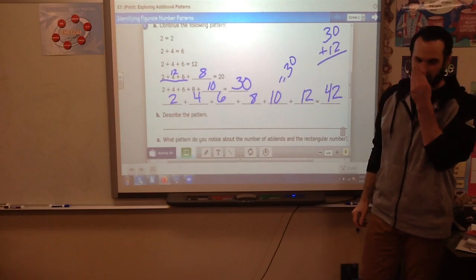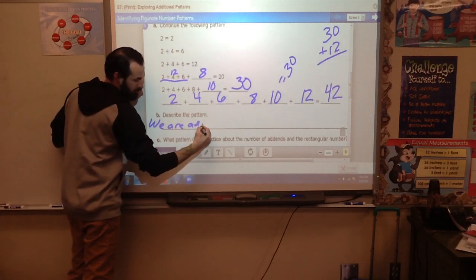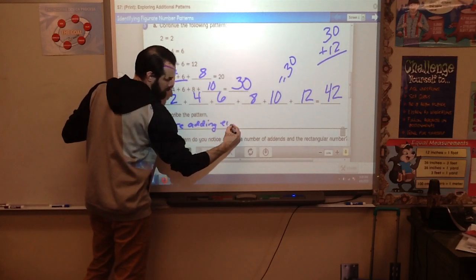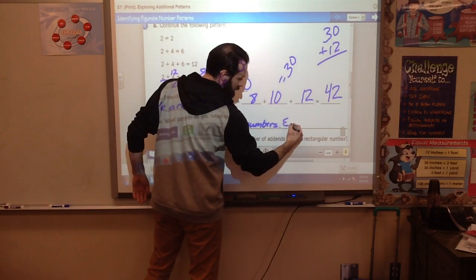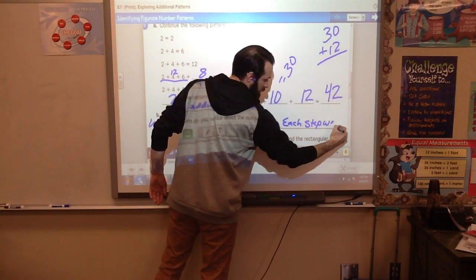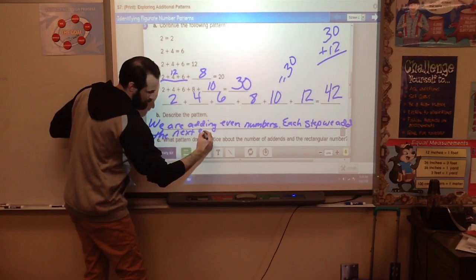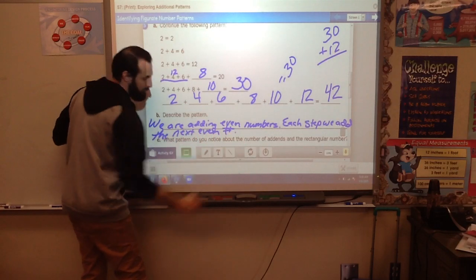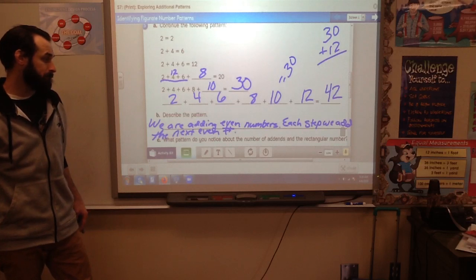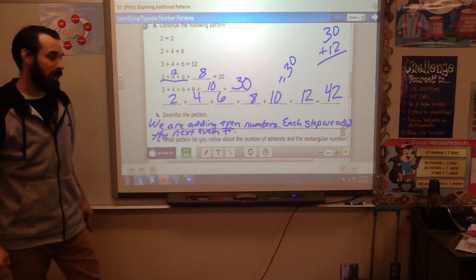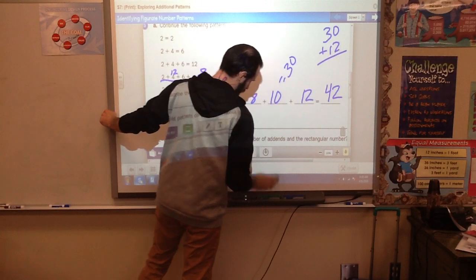Describe the pattern. We are adding even numbers. Each step we add the next even number. Go ahead and get that written down. I'm going to leave this while we look at the next one. I'm going to slide it back up.